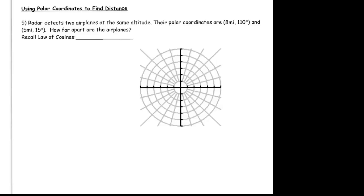In this example we're going to see how polar coordinates can be used to make distance problems a little bit more straightforward than in rectangular form. We have that a radar detects two airplanes at the same altitude, and the polar coordinates of these airplanes are 8 miles at 110 degrees, and 5 miles at 15 degrees. We're expected to find out how far apart the airplanes are.